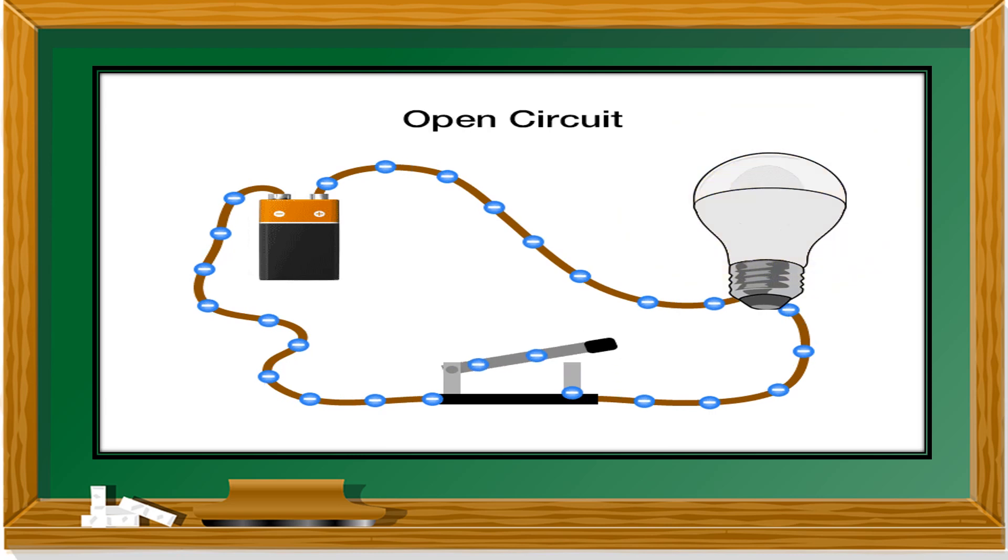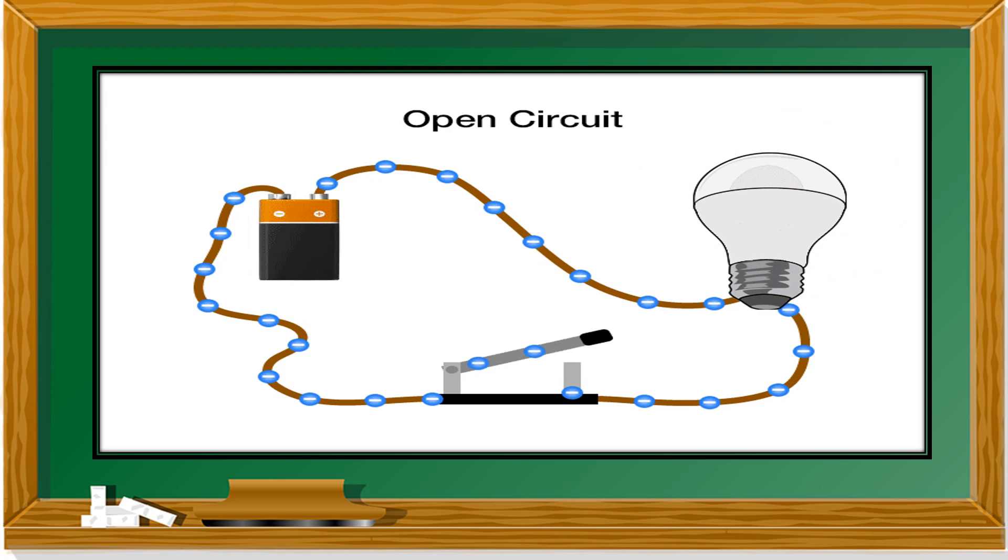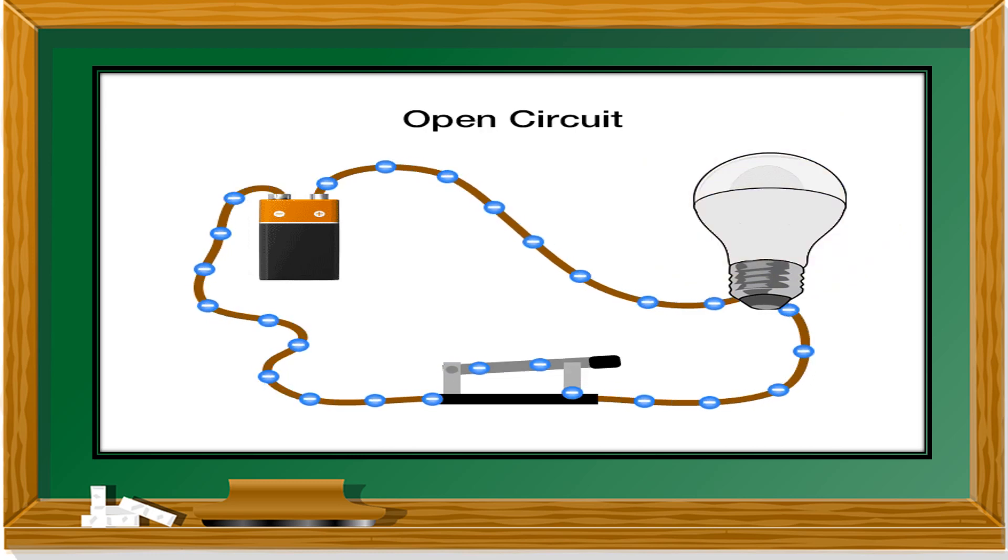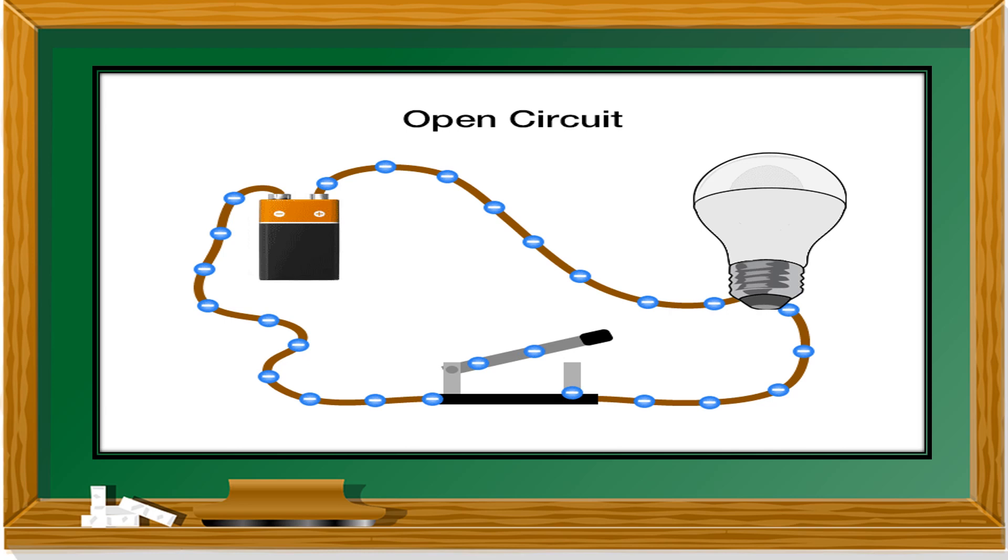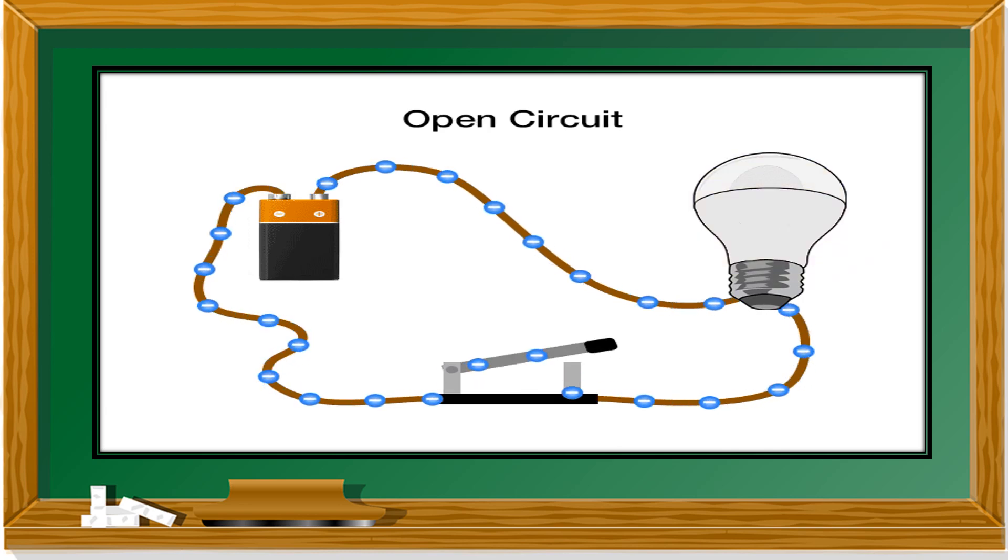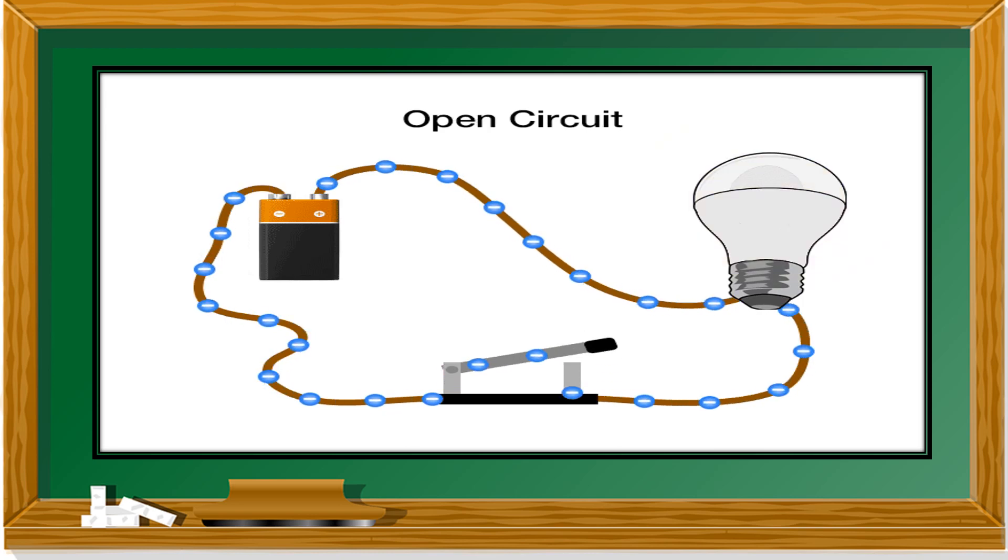A closed circuit makes the bulb light up because the path of electricity is complete, allowing electricity to flow through it. While an open circuit, electricity does not flow because there is a gap or no complete path from one end of the circuit to the other end.